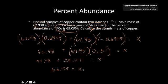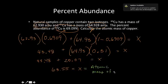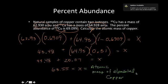X is equal to the atomic mass of elemental copper: 63.55 amu. This is the atomic mass you'll find on the periodic table, and you can use the periodic table to check your work on these problems.